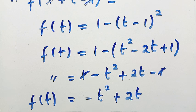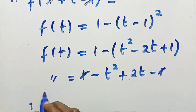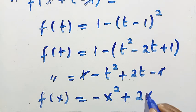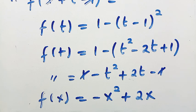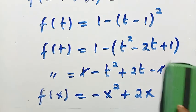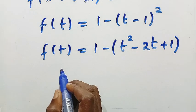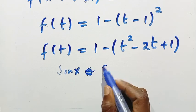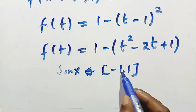Replacing t with x, we get f of x equals minus x squared plus two x. This is the solution. To define the domain: since sine x is a trigonometric function, sine x is a member of the interval minus one to one.